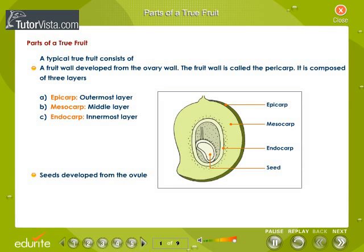Parts of a True Fruit. Observe carefully the internal structure of a true fruit of mango. A typical true fruit consists of a fruit wall developed from the ovary. The fruit wall is called the pericarp, and it is composed of three layers: epicarp, the outermost layer; mesocarp, the middle layer; and endocarp, the innermost layer. Seeds develop from the ovule.